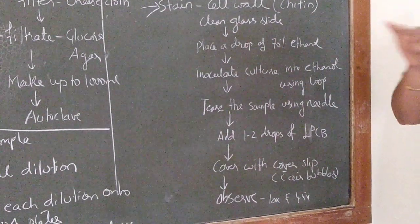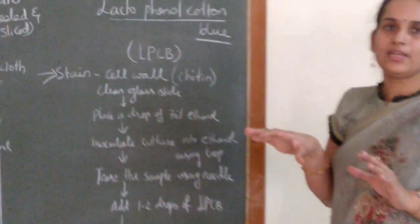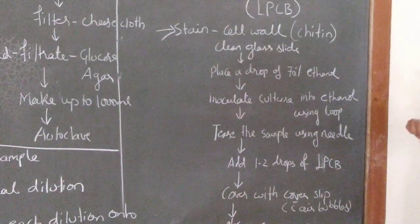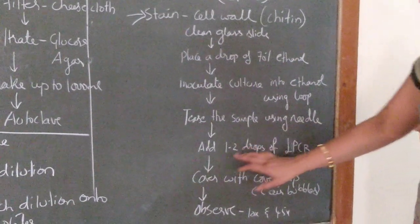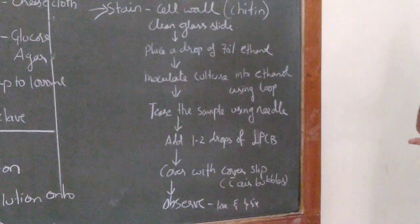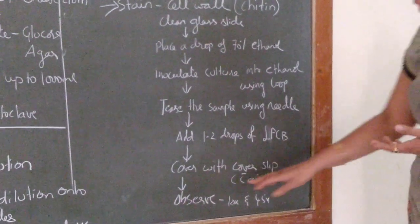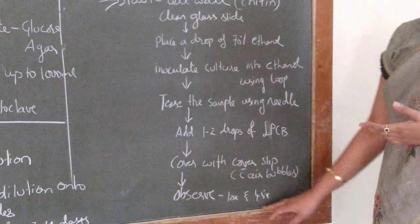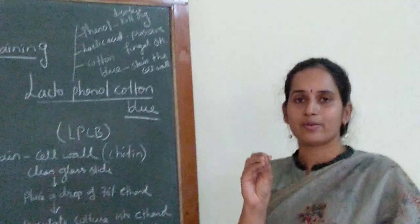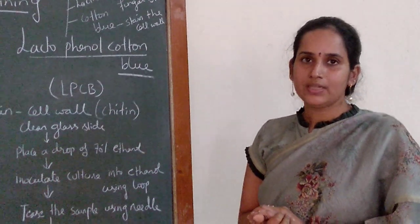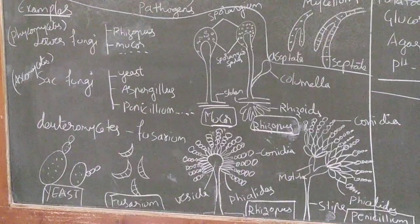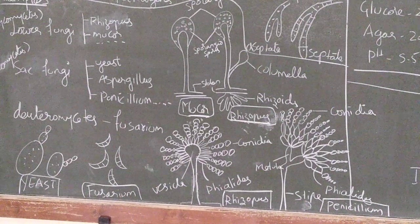Tease the sample using a needle to spread out the cottony growth or mycelium. Nicely tease out the mycelium on the glass slide. Then add one or two drops of lacto-phenol cotton blue and cover with a cover slip without any air bubbles. Observe immediately under the microscope at 10x as well as 45x. The fungal structures will be stained dark blue and the background will be light blue. Based on the specific structures, you can identify which fungal species is present.